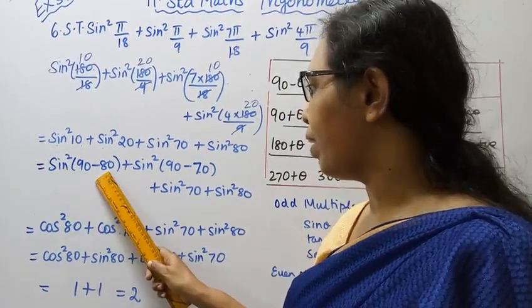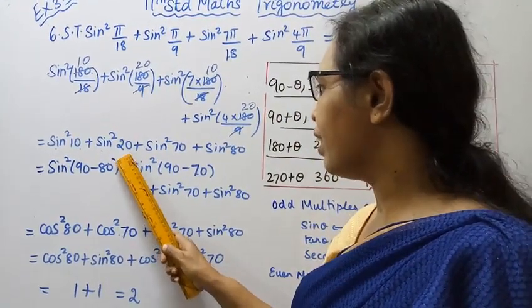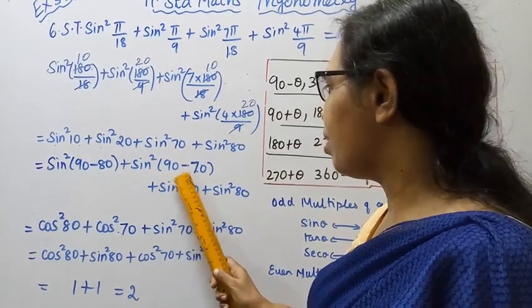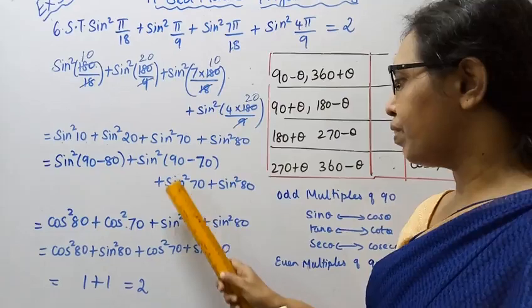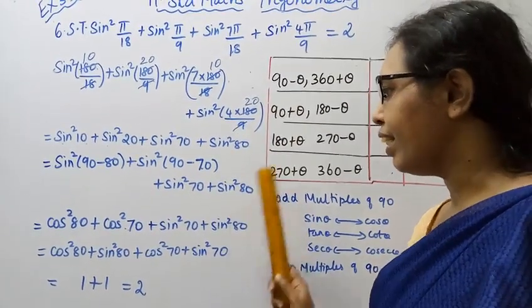Now we can write this as sine square 90 minus 80 plus sine square 90 minus 70 plus sine square 70 plus sine square 80. We have sine square 90 minus 80 is 20, sine square 90 minus 70 is 20. Here sine square 70, sine square 18.